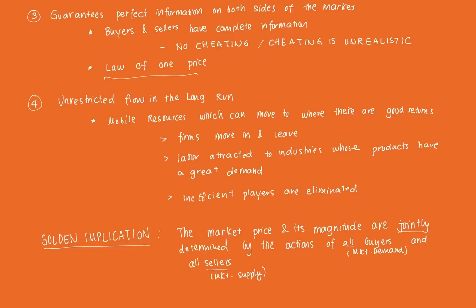Perfect information leads to little incentive to cheat and gives rise to the law of one price. The fourth assumption ensures unrestricted flow of resources between alternative employment in the long run. The resources a firm has are always mobile and move toward market conditions that offer the greatest return. Firms can move to markets where they can make profits and leave those where they incur losses.